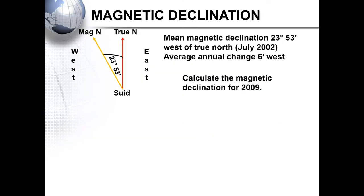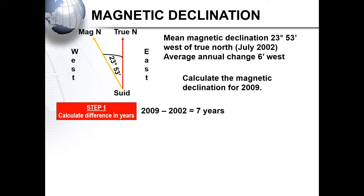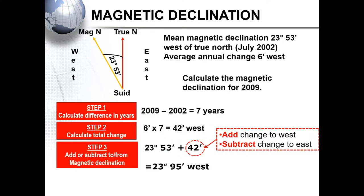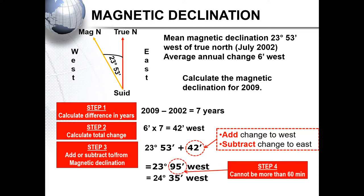In July 2002 the mean magnetic declination is 23 degrees and 53 minutes west, with a 6-minute west average annual change. First, calculate the difference in years — 7 years — then multiply 7 by 6 minutes to get 42 minutes west total change. If the change is to the west, we add; if east, we subtract. Adding 42 minutes west to the current magnetic declination gives 23 degrees and 95 minutes west. Recognizing that 95 minutes is invalid, the magnetic declination for 2009 is read as 24 degrees 35 minutes west.